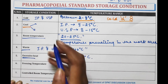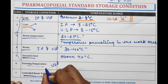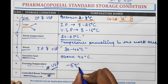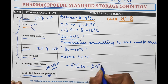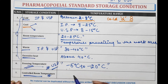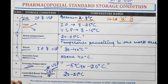Indian Pharmacopoeia has described five storage conditions. Freezing temperature and controlled room temperature have been described by USP only and are not mentioned in IP. According to USP, freezing temperature means a temperature between minus 5 degrees Celsius to minus 20 degrees Celsius. Controlled room temperature, also known as CRT, means the temperature range must be maintained between 20 to 25 degrees Celsius, similar to room temperature.